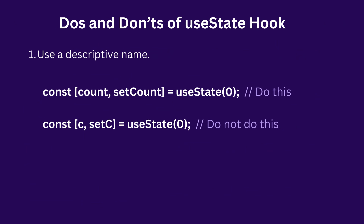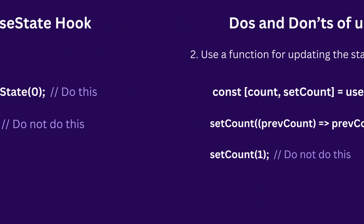The first one is: use a descriptive name. For example, we have 'const count, setCount' with an initial state of zero — we understand what this is trying to do. We know it's related to a count or numbers. But look at the other one: it just says 'c' and 'setC'. What is 'c'? What is 'setC'? If someone who does not know what you're trying to code sees this, they won't understand. So use a descriptive name.